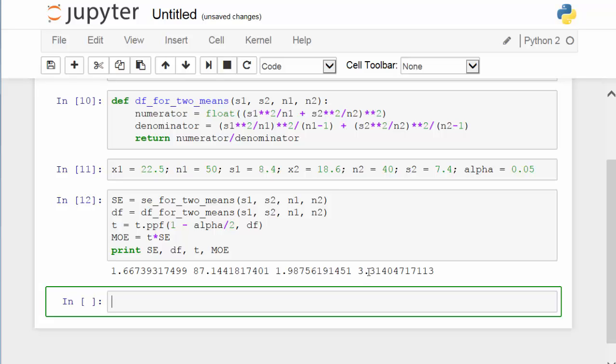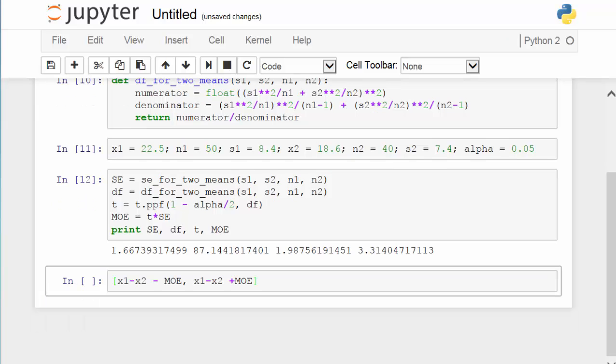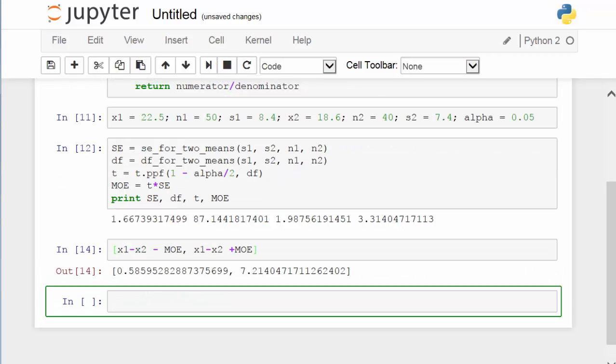And the margin of error is 3.31. Now we are ready to find the lower bound and upper bound of the 95% confidence interval. I am going to generate the lower bound and upper bound of this 95% confidence interval as a list. Let's take a look and give it a try. The 95% confidence interval lower bound is 0.586 miles per day and the upper bound is 7.2 miles per day. We are 95% confident that the difference between the miles Buffalo residents travel per day and the miles Boston residents travel per day is between 0.586 miles and 7.214 miles.